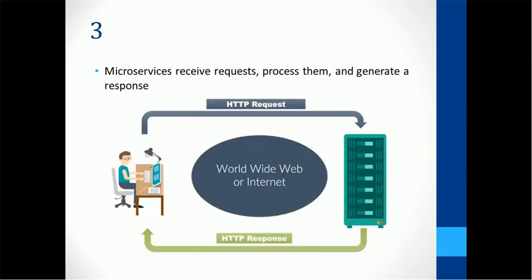The next characteristic of microservices: microservices receive requests, process the requests, and generate a response which is user-friendly or caller-friendly. There is a caller which sends an HTTP request to a system, the system processes it, generates a response, and sends it back to the caller. It is not necessary that the request or response is HTTP — it could be a JSON response, an XML response, or an XML request. The structure is like UNIX: it receives the request, processes it, and responds back.